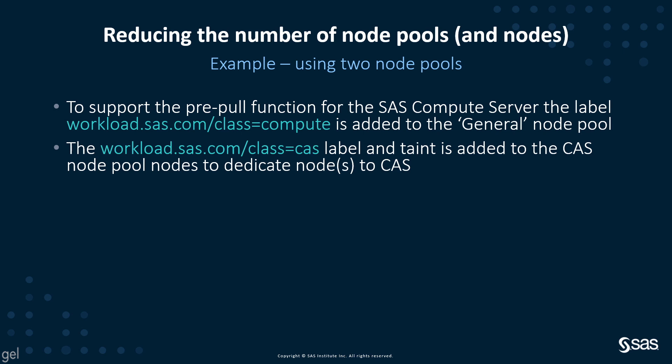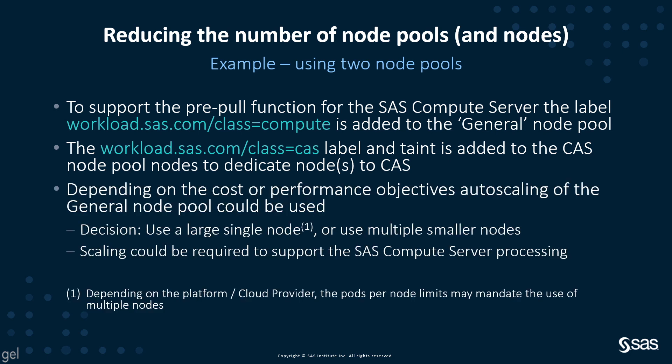Depending on cost or performance objectives, auto-scaling of the general node pool could be used. There's a decision here: should you use a single larger node or multiple smaller nodes? Note that depending on the platform or cloud provider, there are limits on the number of pods per node, which may mandate the use of multiple nodes. Scaling could also be required to support the SAS Compute Server processing.